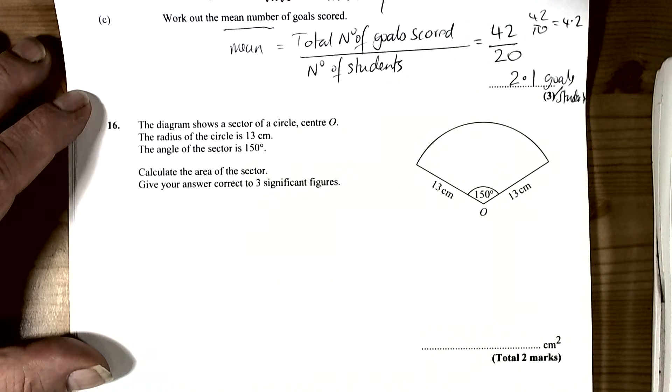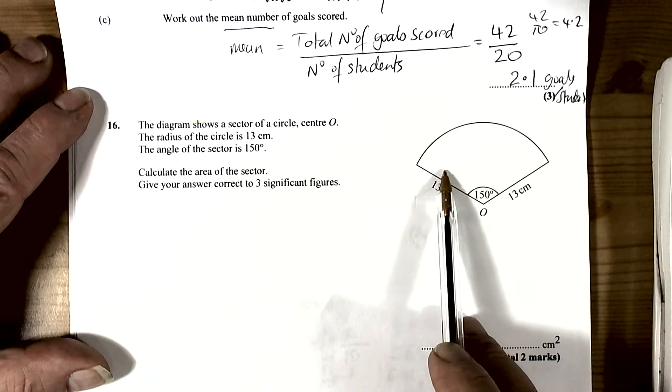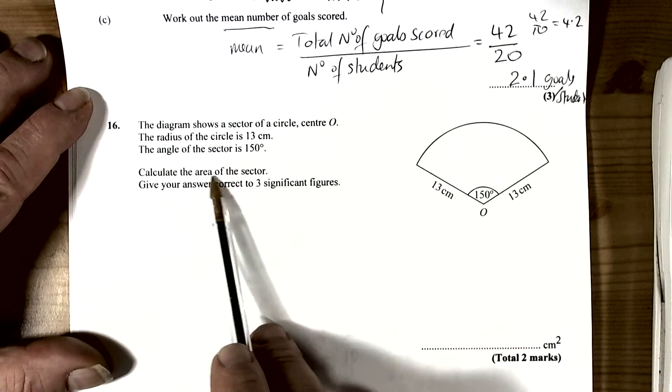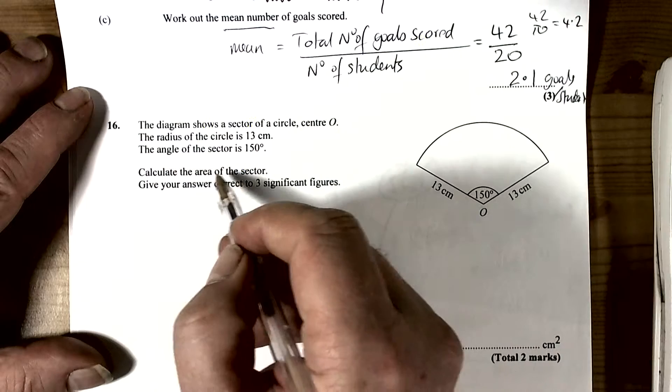So I've got a question here that involves working out the area of a sector. It's given us a radius and angle, and it says calculate the area of the sector.